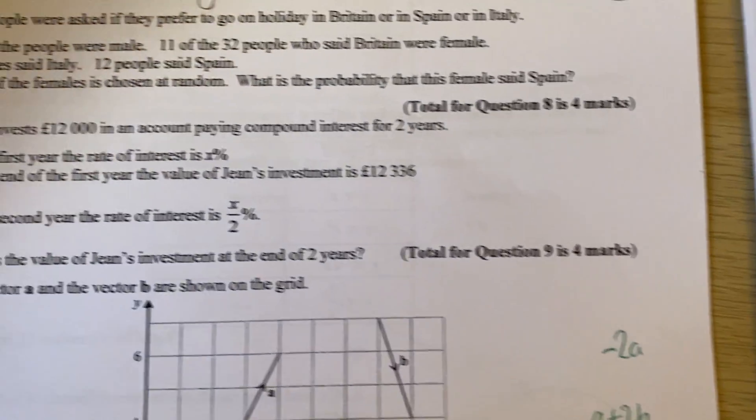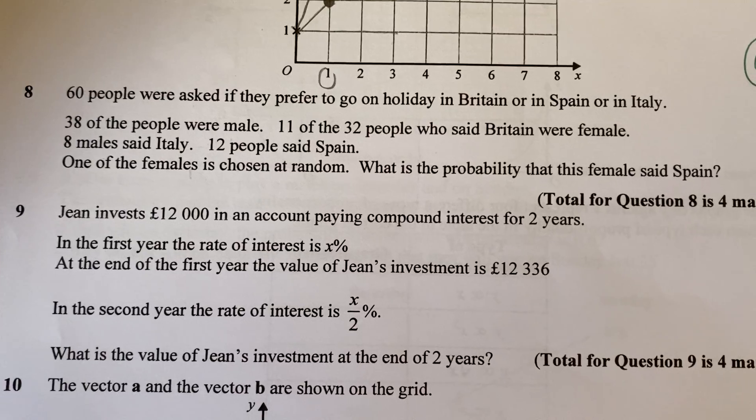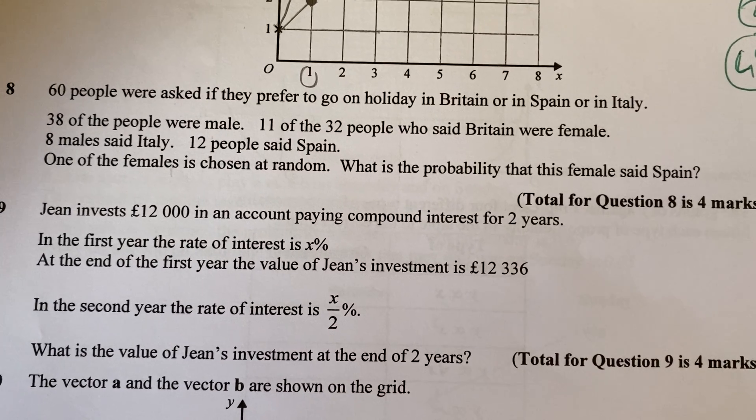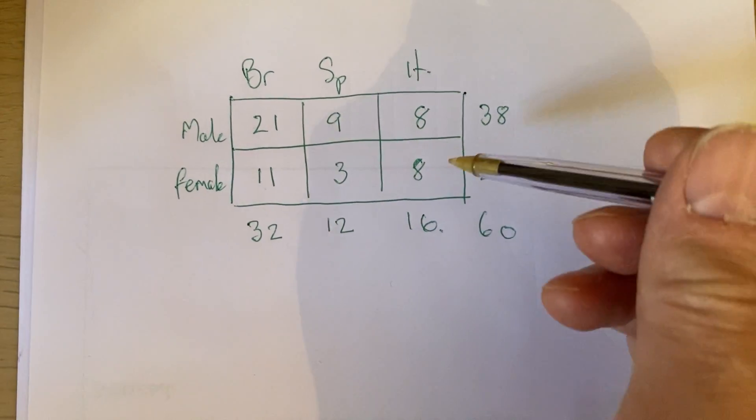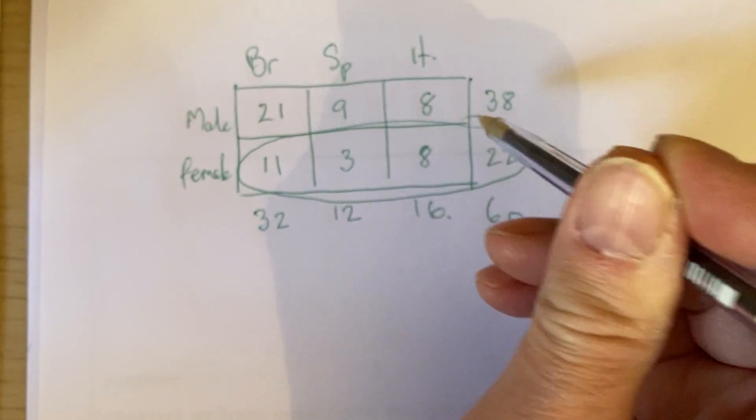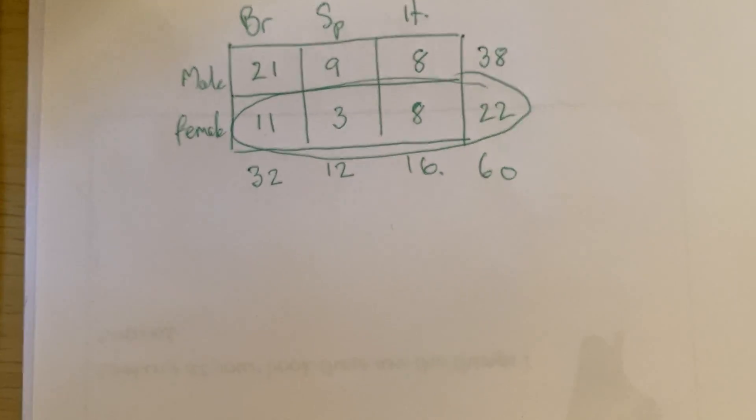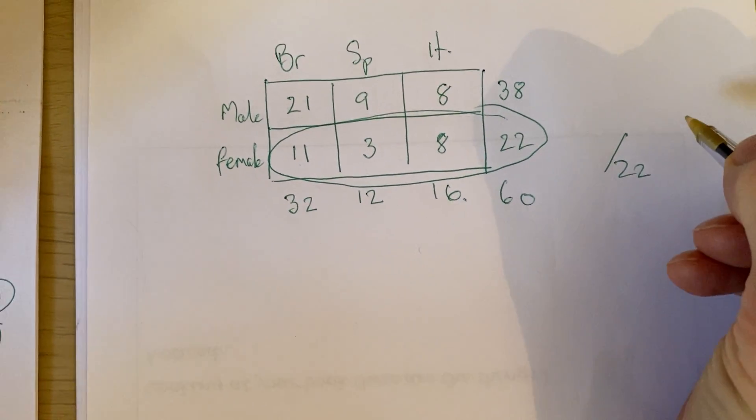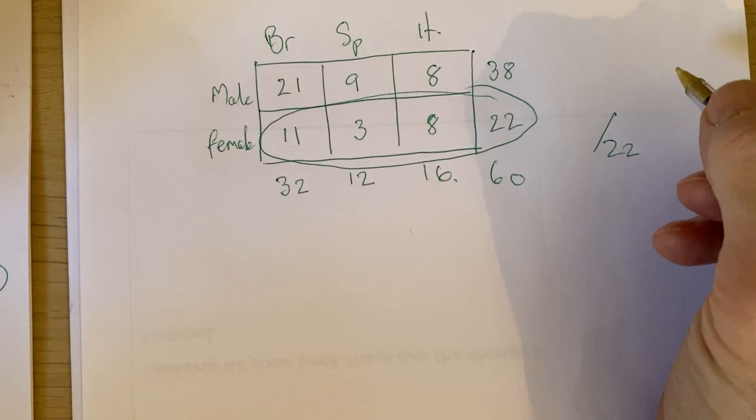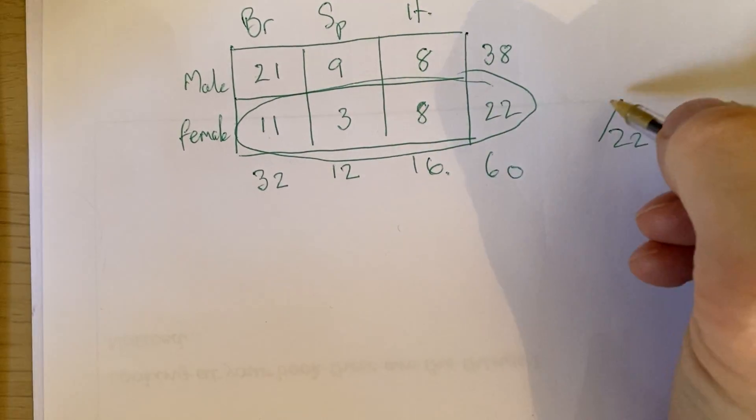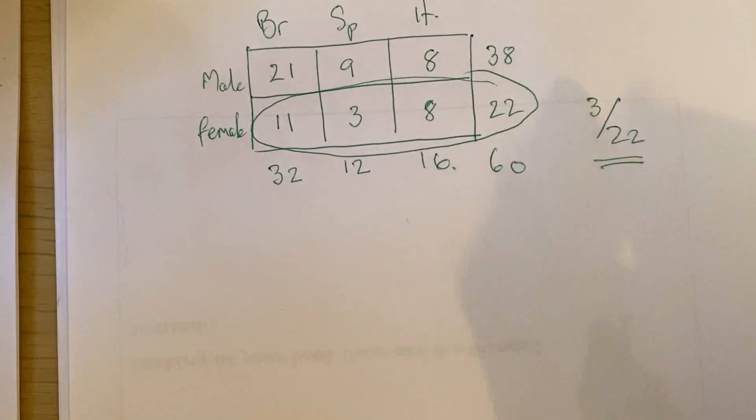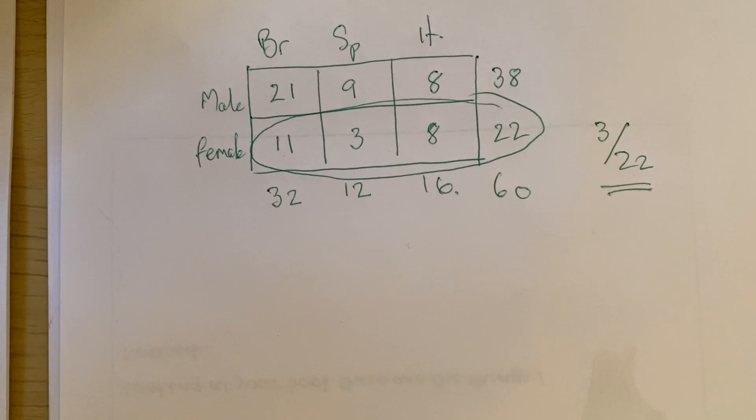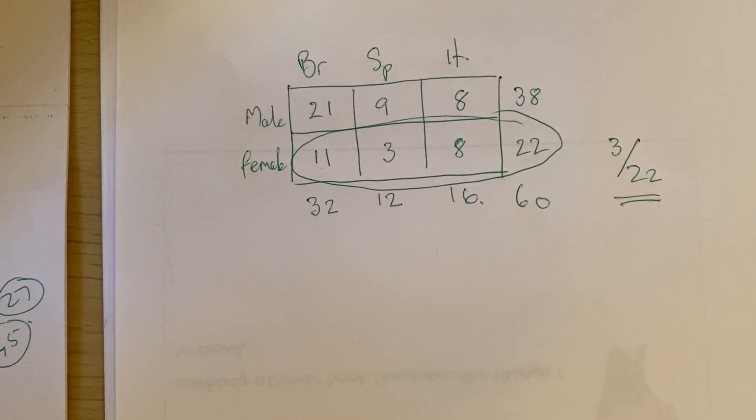And then it says here, it says one of the females has chosen at random. What's the probability that this female said Spain? So one of the females, so of this group, it's of that group. And this is where it gets tricky. It's not of the whole group. It's just of the females. So it's out of 22 and it said, what's the probability? They said Spain and I know it's 3 out of 22. And that's what makes this more of a tricky question because it says it's kind of a given that, a conditional probability, they call this.